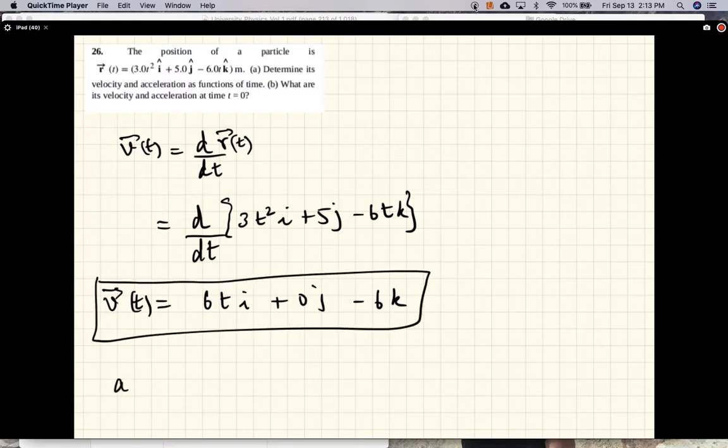Acceleration is given by the derivative of the velocity, which is the second derivative of the position vector.